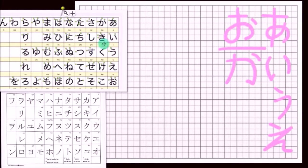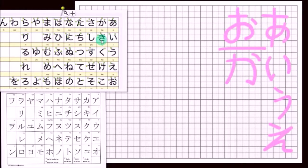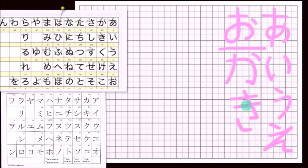Now ki is where there starts to become a difference between the printed style — this is the printed style — versus the handwritten style, which is what I will be showing you and what everybody writes. Nobody writes the printed style because it's not the correct way to write it. The main difference with ki is that there is a break between these two lines. It starts off with two lines, goes across, down with a hook, and instead of connecting, it's just a little curve at the bottom.